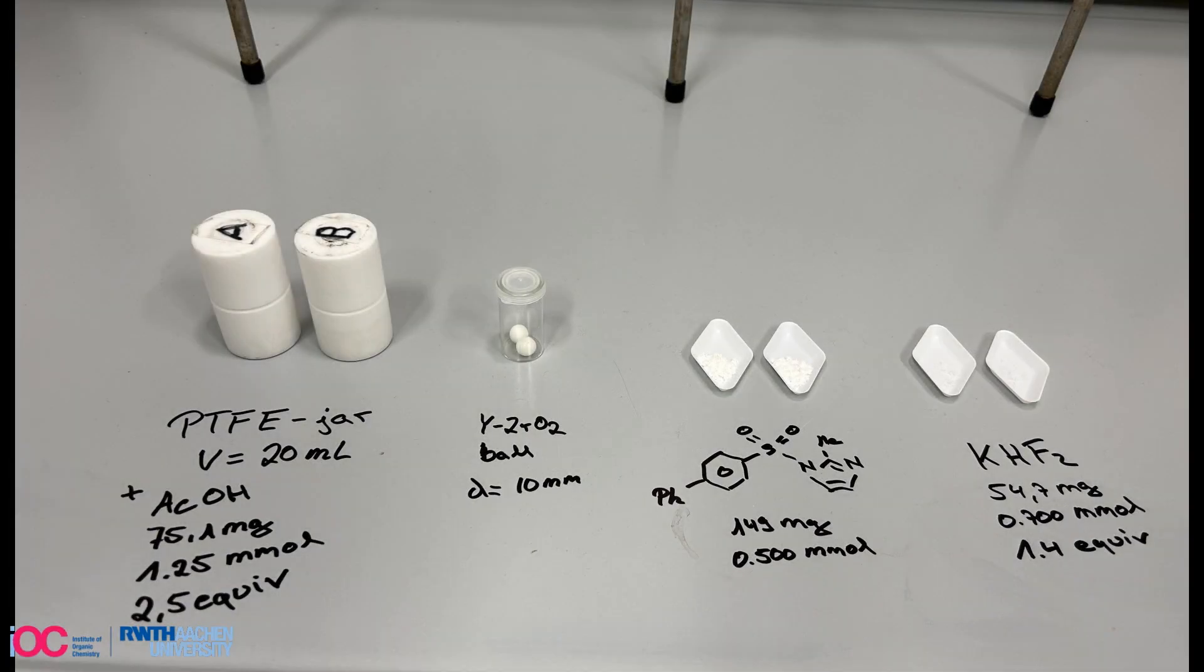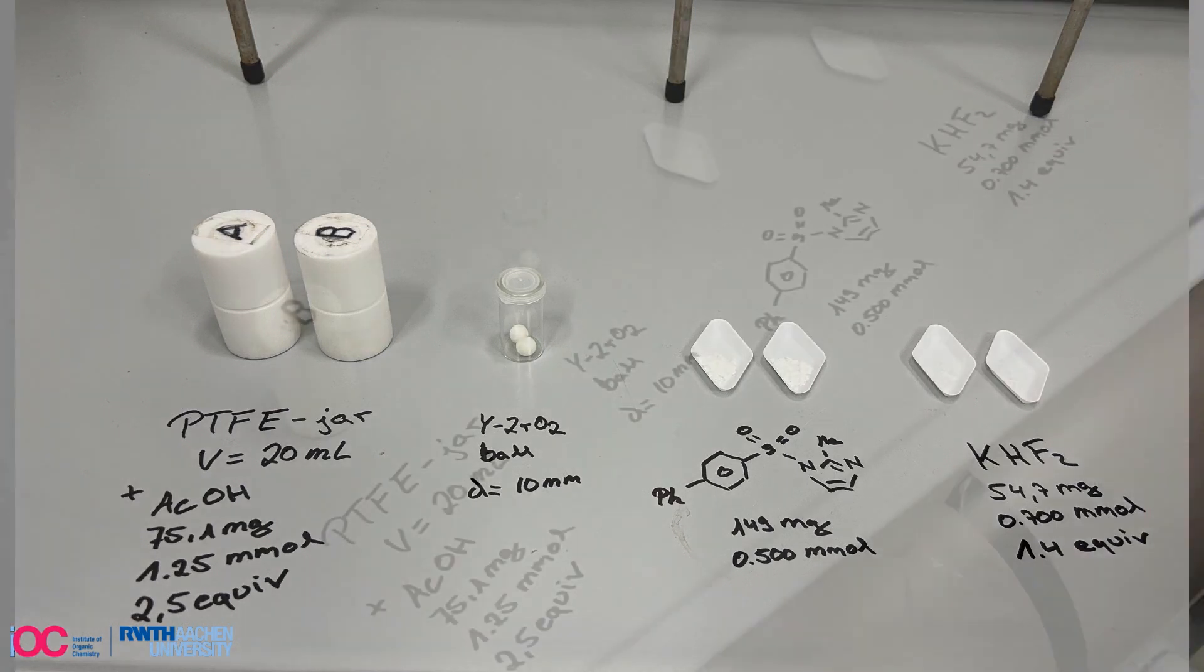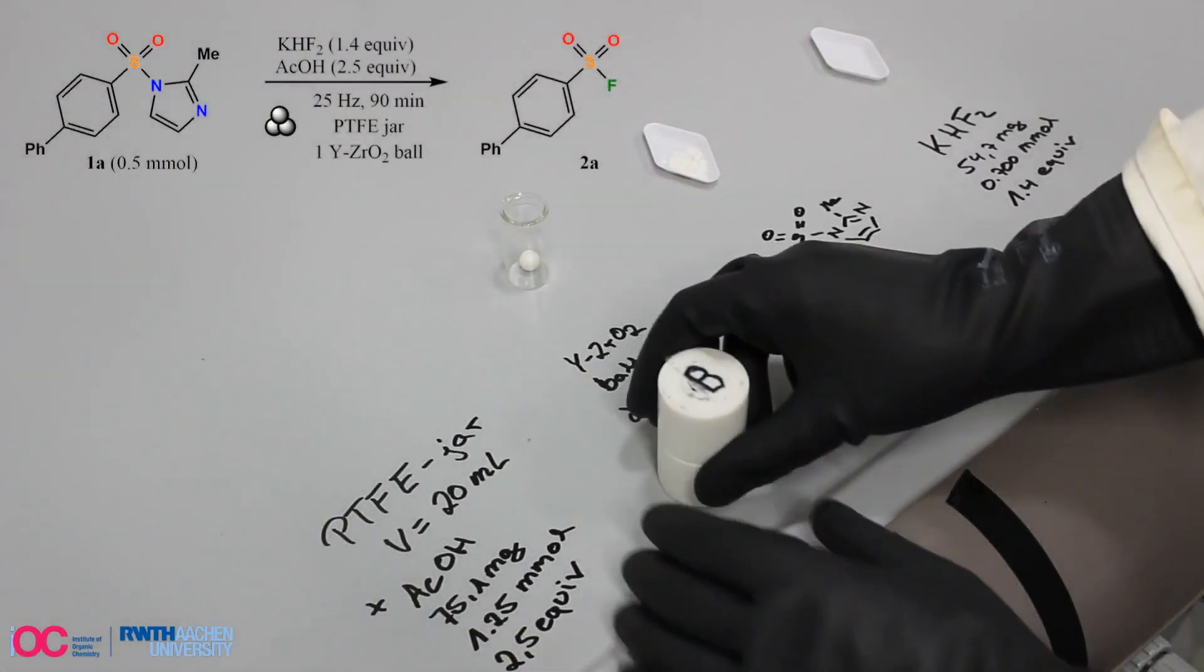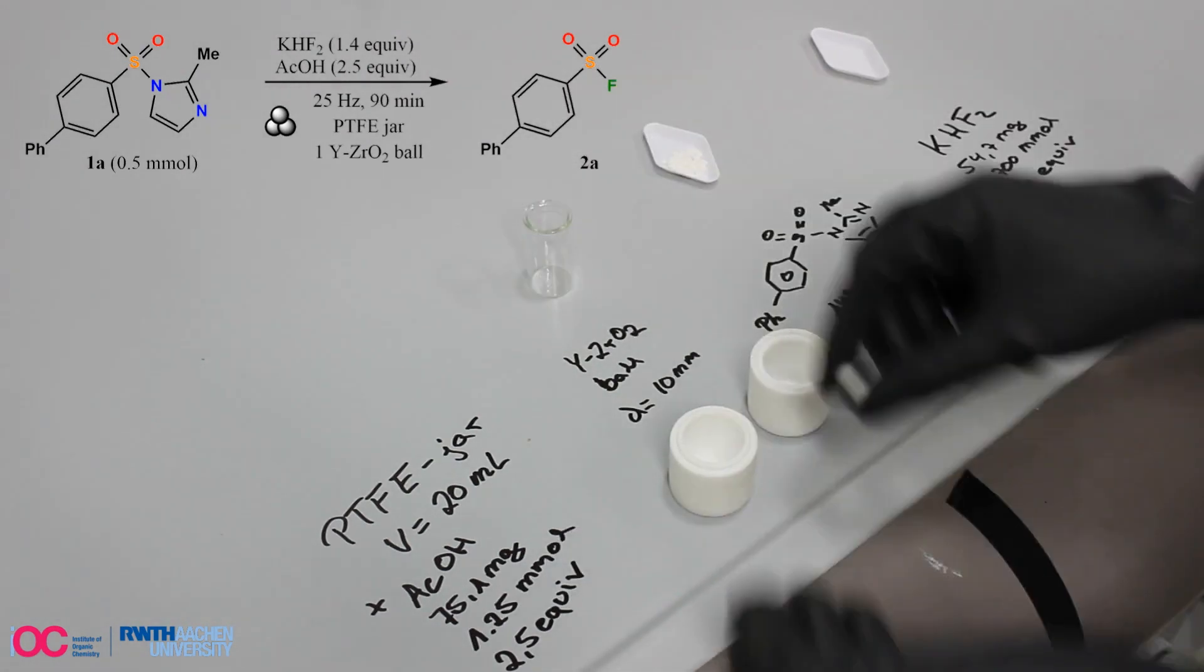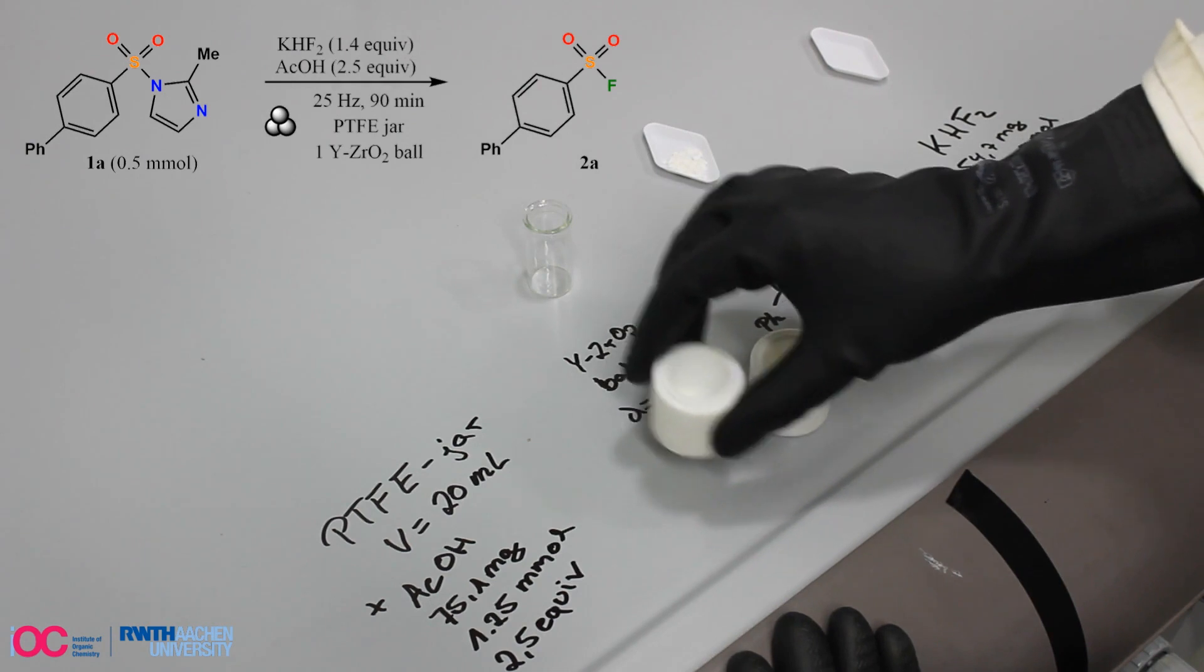For this exemplified transformation, we are using 0.5 millimol of starting material in combination with 1.4 equivalents of potassium bifluoride and 2.5 equivalents of acetic acid.